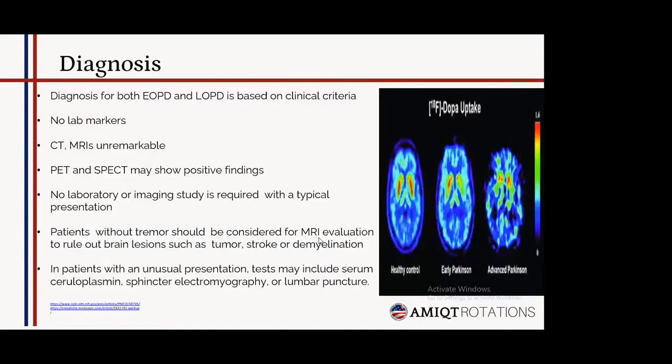Diagnosis for Parkinson's is mostly clinical, and that is how most clinicians diagnose both variants. There are no particular lab markers for the disease. CT and MRI are mostly unremarkable, and PET and SPECT may show positive findings. No laboratory or imaging study is required with a typical presentation. Patients without tremor should be considered for MRI evaluation to rule out brain lesions such as tumor, stroke, or demyelination. In unusual presentations, tests may include ceruloplasmin, sphincter electromyography, or lumbar puncture.